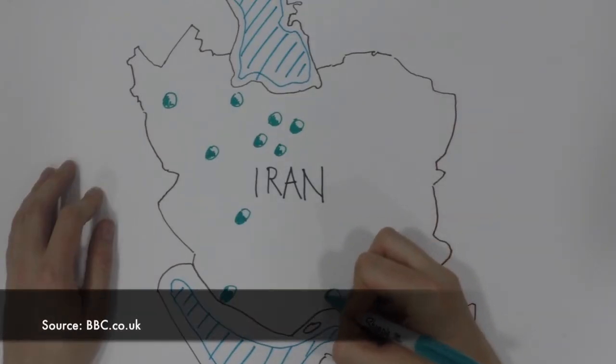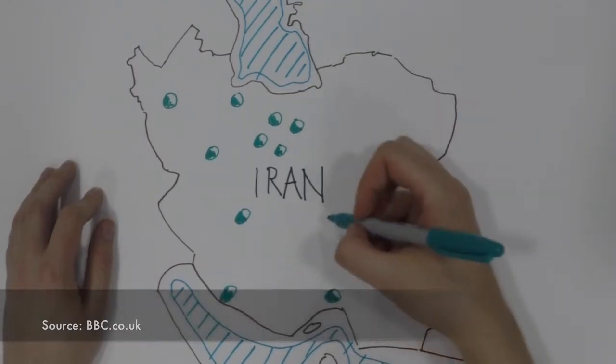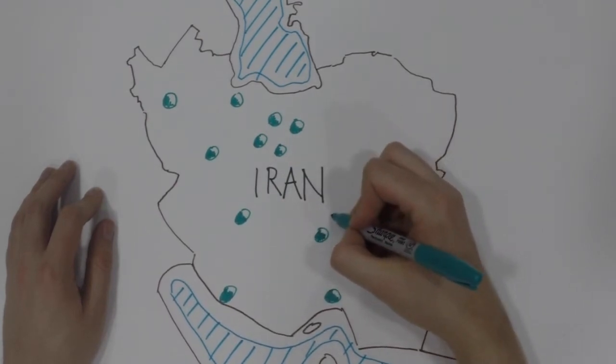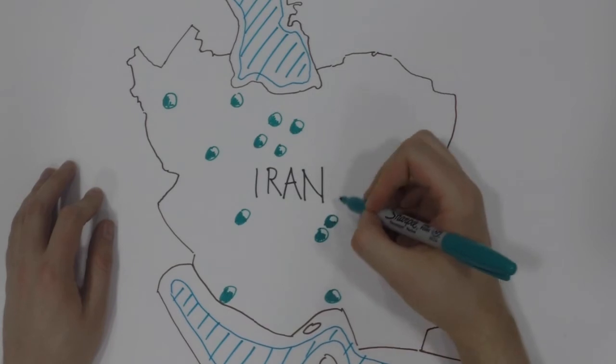Iran's nuclear program currently consists of a nuclear power station, three uranium mines, several enrichment plants, a research center, and several other related facilities.